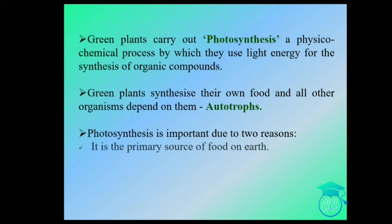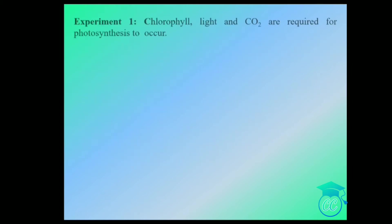Photosynthesis is important due to two main reasons: it is the primary source of food on earth, and it produces oxygen into the atmosphere. Now let's look at some of the experiments conducted in photosynthesis — chlorophyll, light, and carbon dioxide are required for photosynthesis to occur.